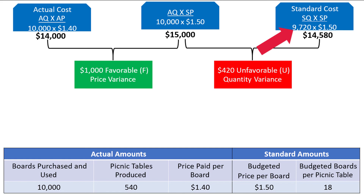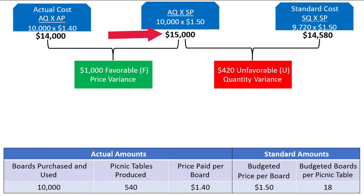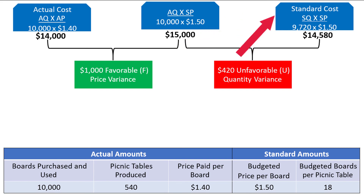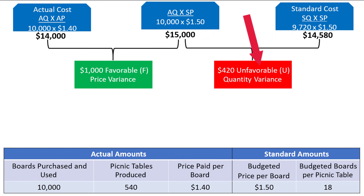If you have set up your problem exactly how I have, here's a quick and easy way to determine if the variances are favorable or unfavorable: increasing from left to right suggests a favorable variance, and decreasing from left to right suggests an unfavorable variance. For example, from $14,000 to $15,000 is an increase, which makes the price variance favorable. From $15,000 to $14,580 is a decrease, making the quantity variance unfavorable.